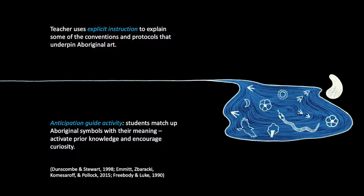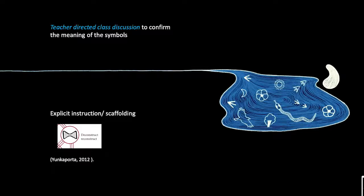Next is an anticipation guide activity. In this task, students in small groups will try to match up Aboriginal symbols on small pieces of paper with their written meanings. This task will help students activate their prior knowledge and make them more curious about the upcoming animation. This activity finishes with a teacher-directed class discussion to confirm the correct meanings for each symbol. Using explicit instruction and scaffolding to support the growth of knowledge is recommended by the Eight Ways Aboriginal Pedagogy Model, which refers to the process as deconstruct and reconstruct.